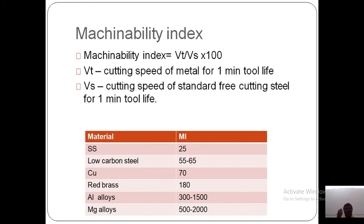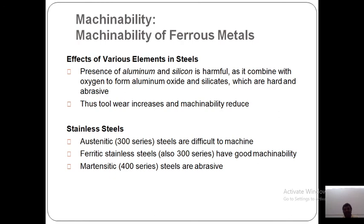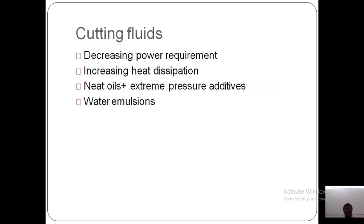The machinability index is expressed as: (VT / VS) × 100, where VT is the cutting speed of the metal for one minute of tool life, and VS is the cutting speed of the standard free-cutting material for one minute. Machinability index values for various materials include: stainless steel 25, low carbon steel 255 to 65. Machinability index depends on ferrous materials — steels — and non-ferrous materials such as aluminium, beryllium, cobalt, copper, magnesium, titanium, and tungsten.